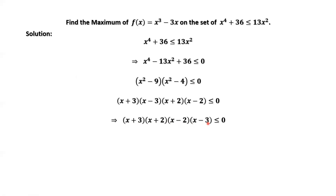The general idea to solve this kind of inequality is to use all zeros to cut the whole x-axis into subintervals. Here we use four zeros to cut the x-axis into five subintervals: negative infinity to -3, -3 to -2, -2 to 2, 2 to 3, and 3 to positive infinity.